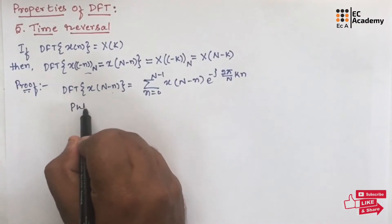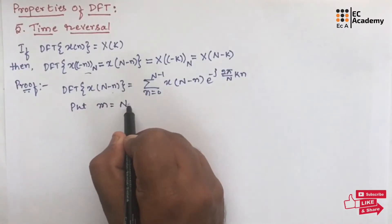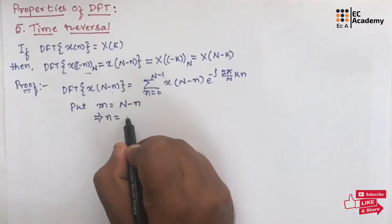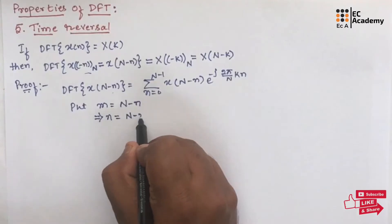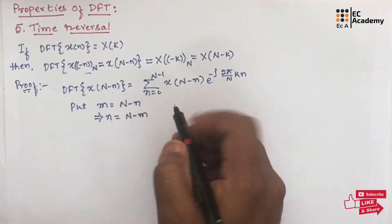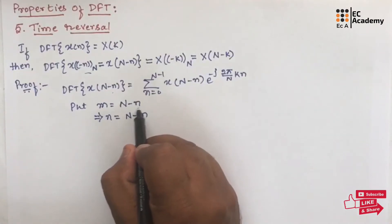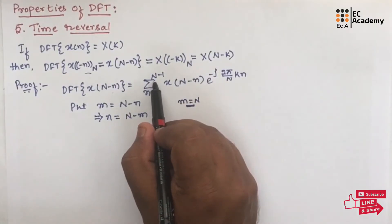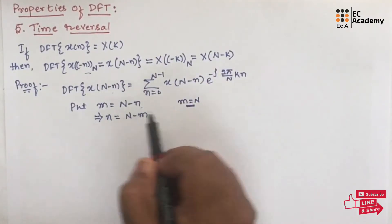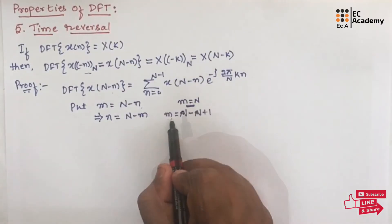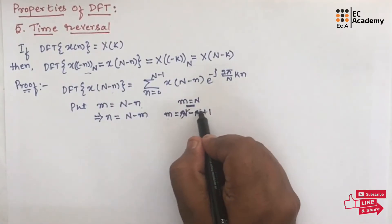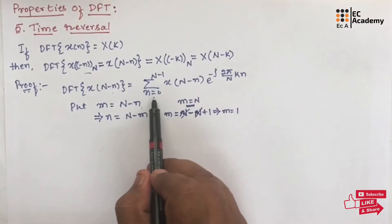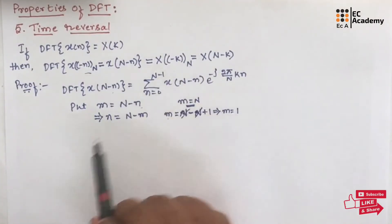Now let us put m equal to capital N minus n. From this, we can write small n equal to capital N minus m. In the lower limit of the summation, if we put n equal to 0, we get m equal to N. In the upper limit, n value is N minus 1; putting that in, m will be equal to N minus N plus 1, so m will be equal to 1. So the lower value of the summation will be N and the upper value will be 1.